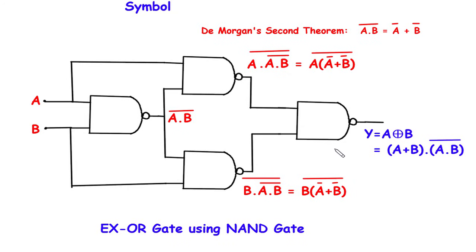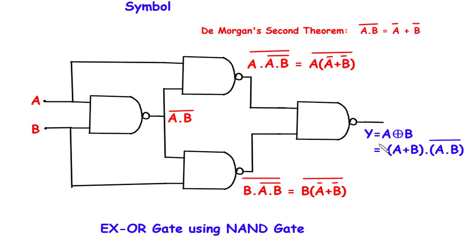Now if we use these as inputs for the final NAND gate, then its output will be A plus B dot A dot B whole bar, which is the same as the XOR gate output.